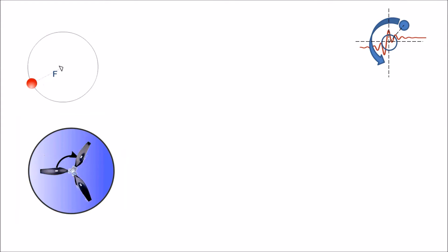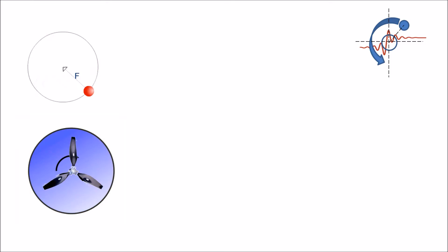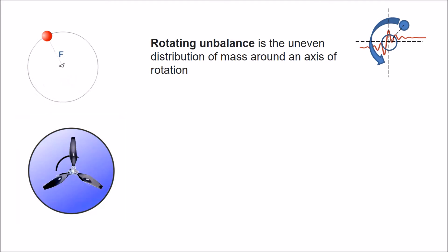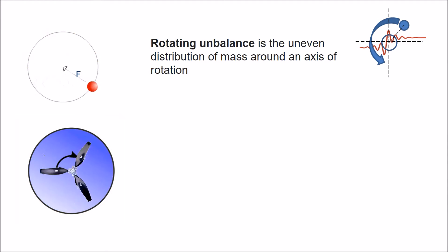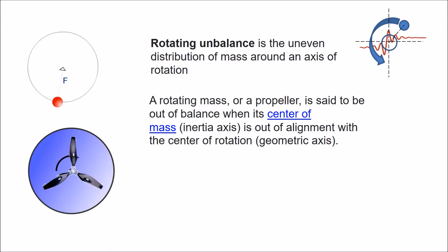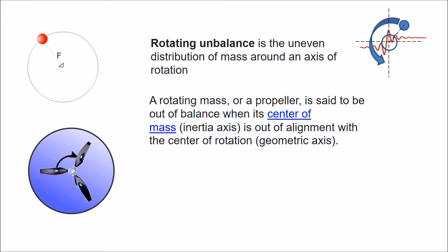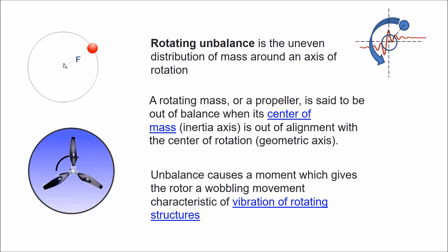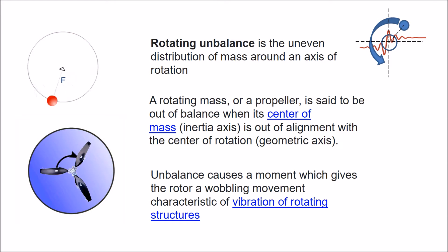For example, a rotating unbalance is the uneven distribution of mass around an axis of rotation. When does a propeller from an RC plane have an unbalance? A rotating mass, or here a propeller, is said to be out of balance when its center of mass is out of alignment with the center of rotation. Unbalance causes a moment which gives the propeller a wobbling movement, characteristic of vibration of rotating structures.